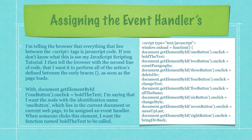If you don't know what this is, see my JavaScript scripting tutorial. I then tell the browser with the second line of code that I want to perform all of the actions defined between the curly braces as soon as the page loads. With the line of code that begins with document.getElementById, I'm saying I want the node with the identification name 'one button', which lies in the current document, to be assigned an event handler.